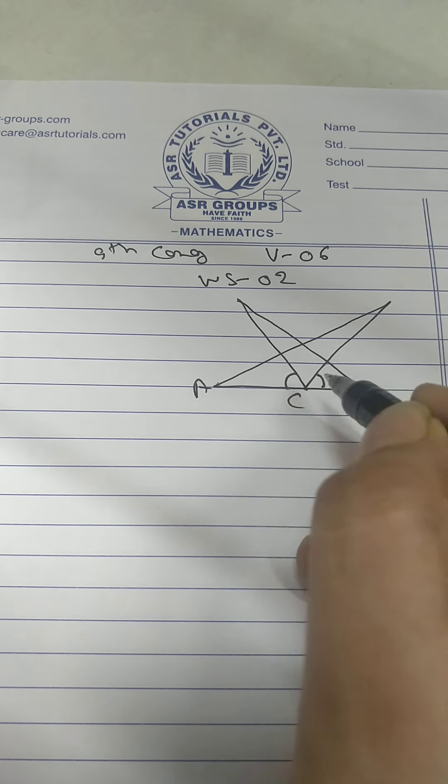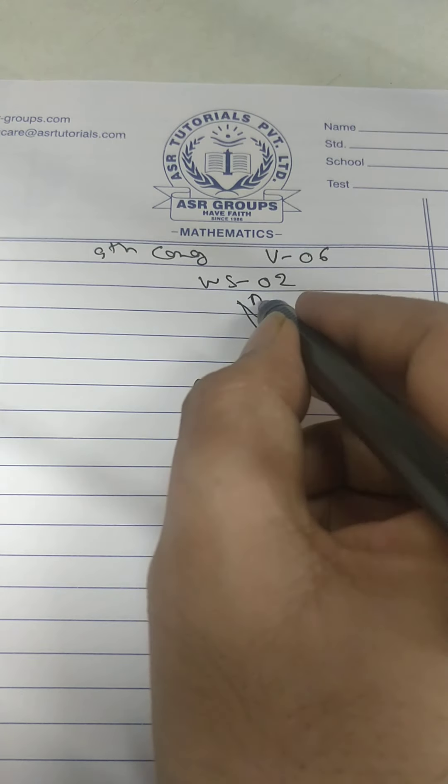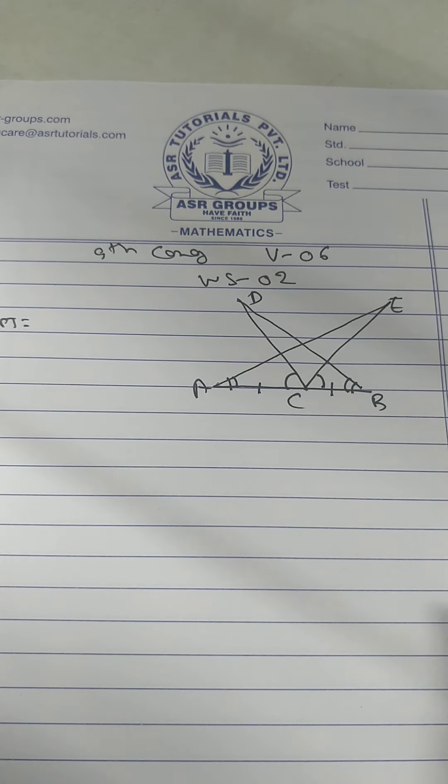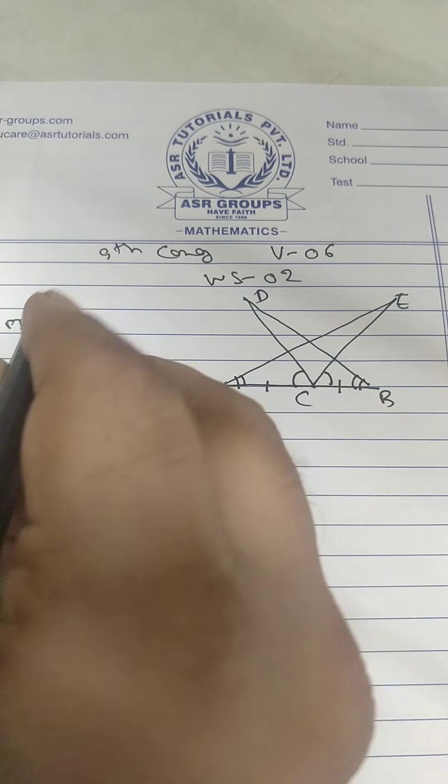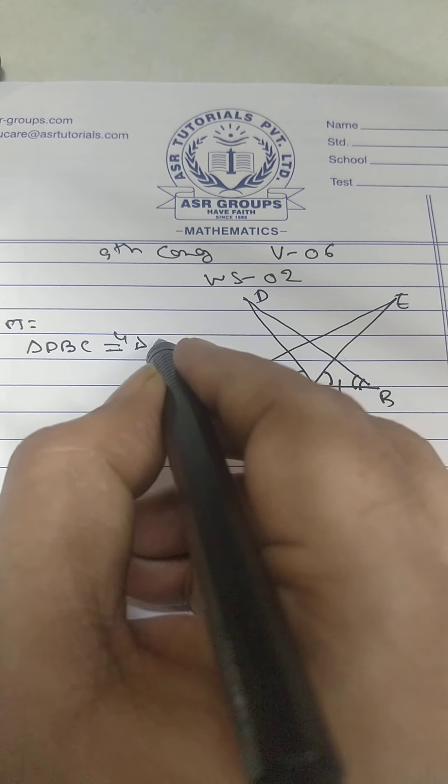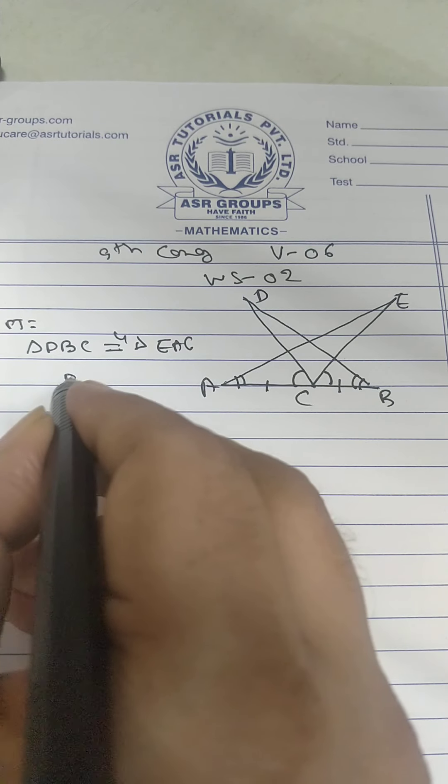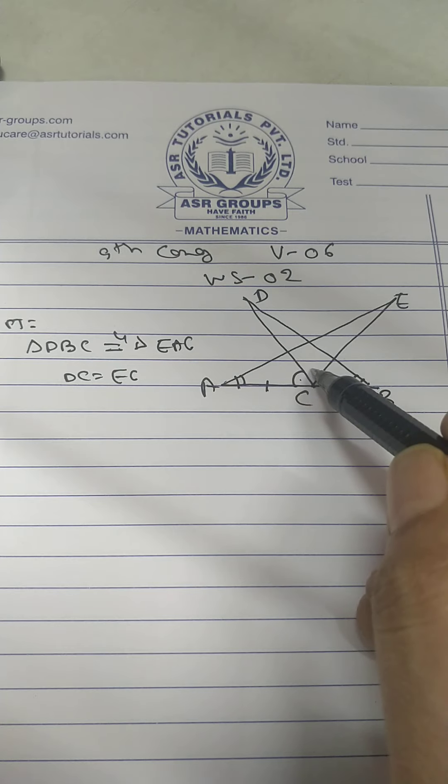These two angles are equal and these two equal and these two equal. I have to prove first triangle DBC congruent EAC and DC equal EC. You can see this plus this will be same as this plus this.